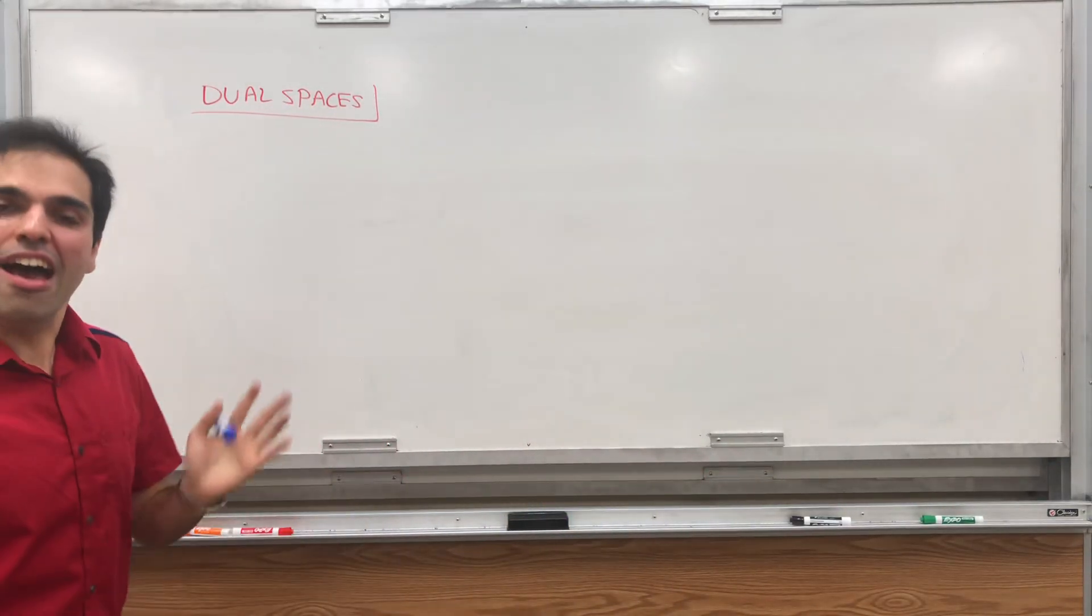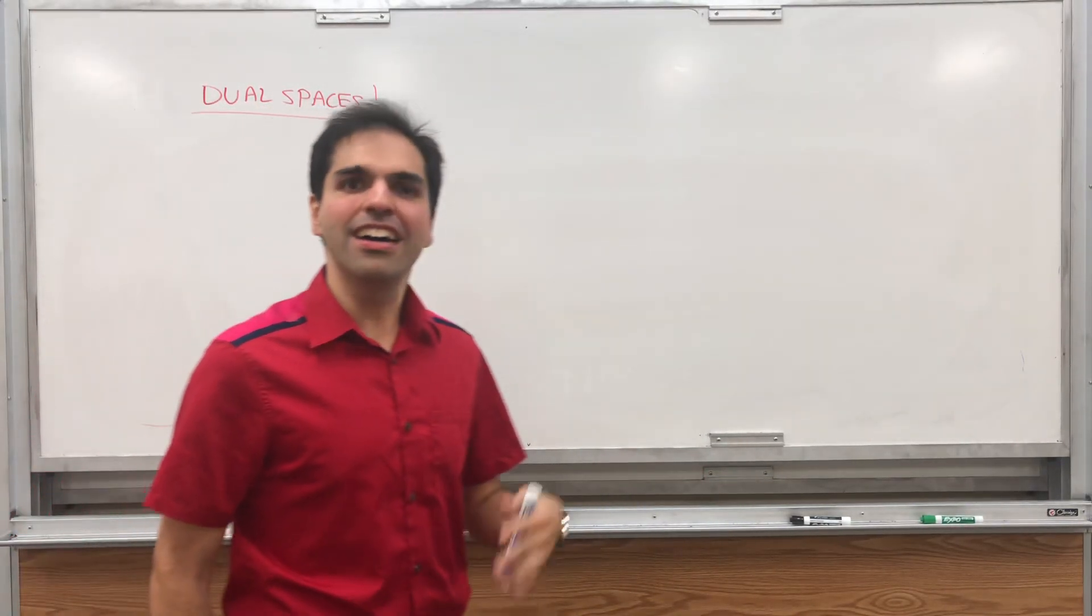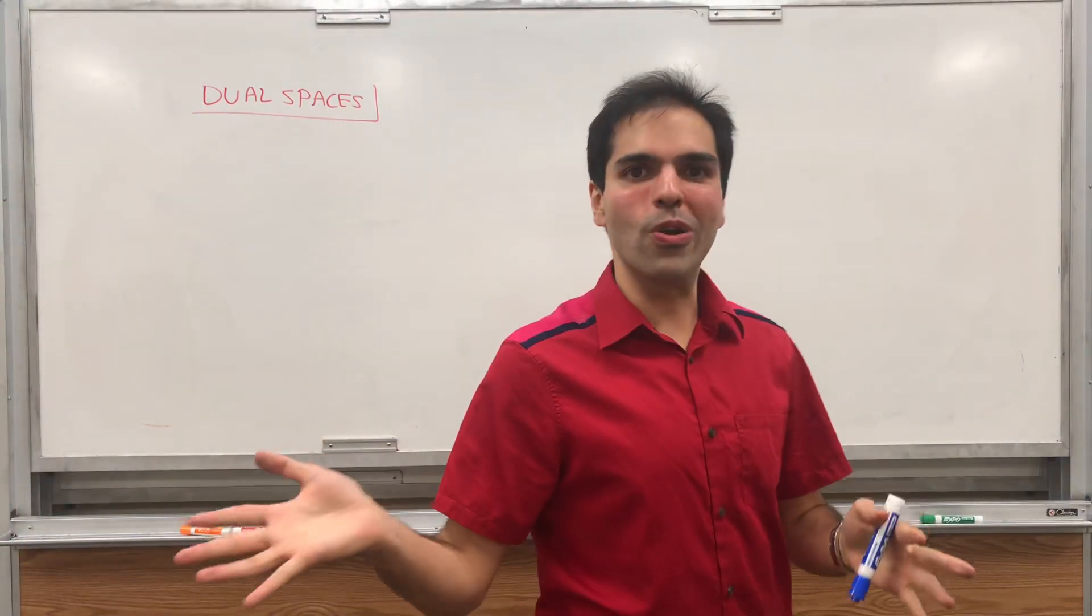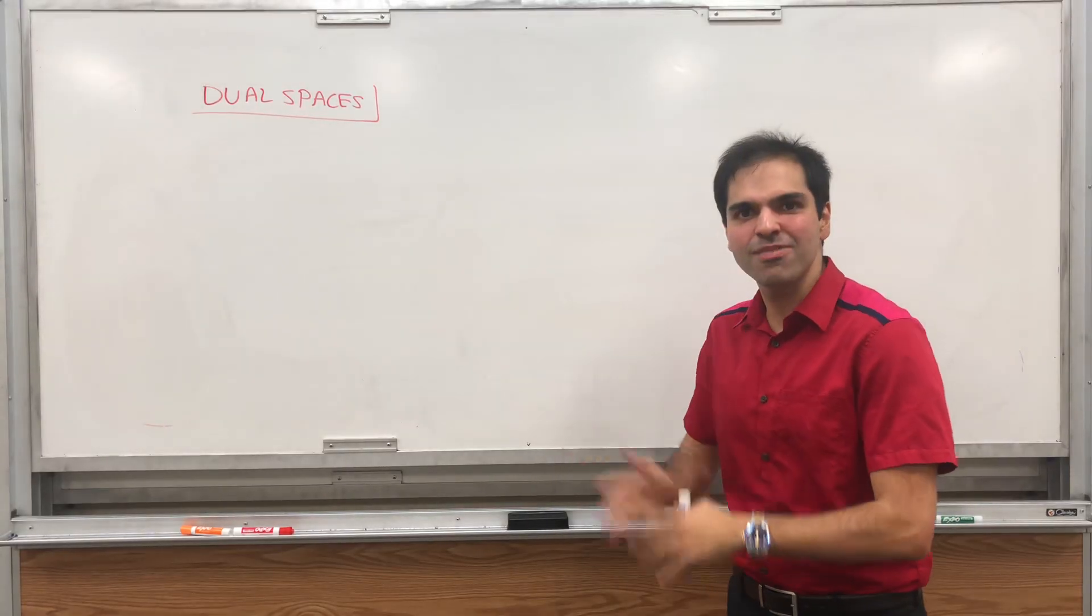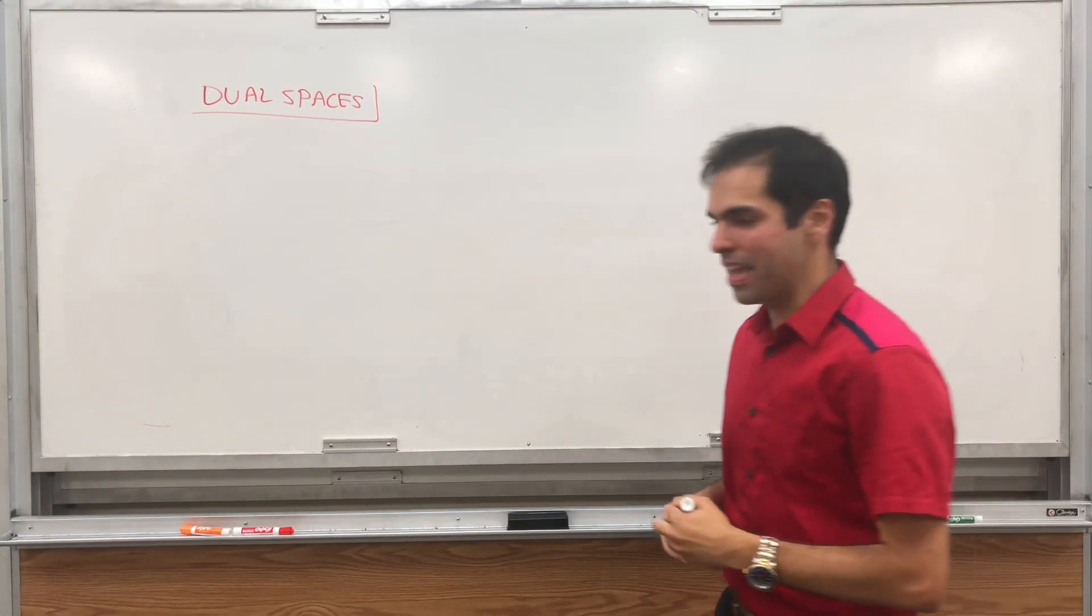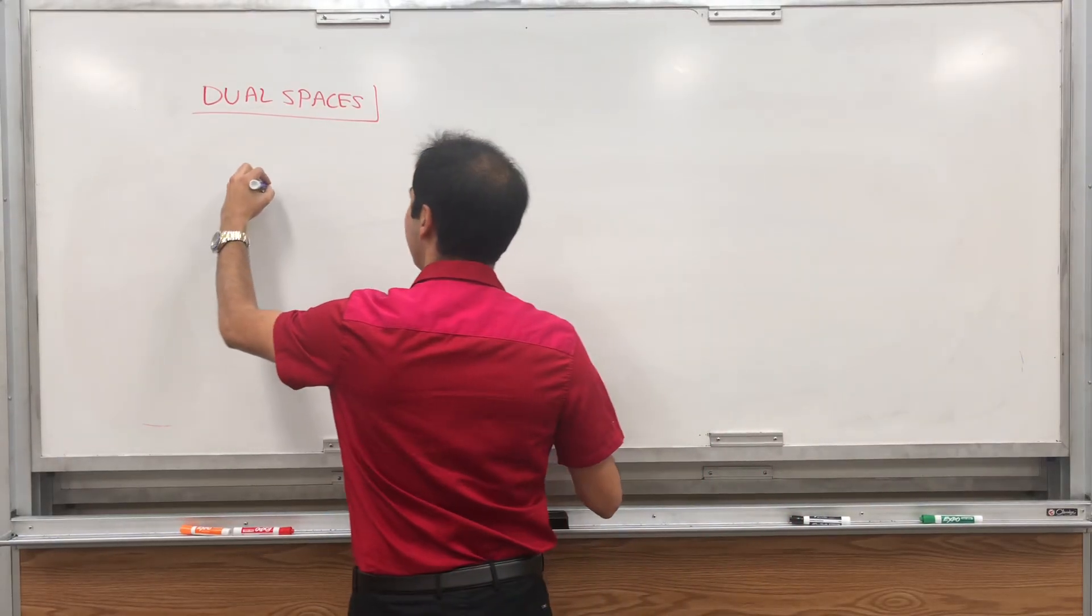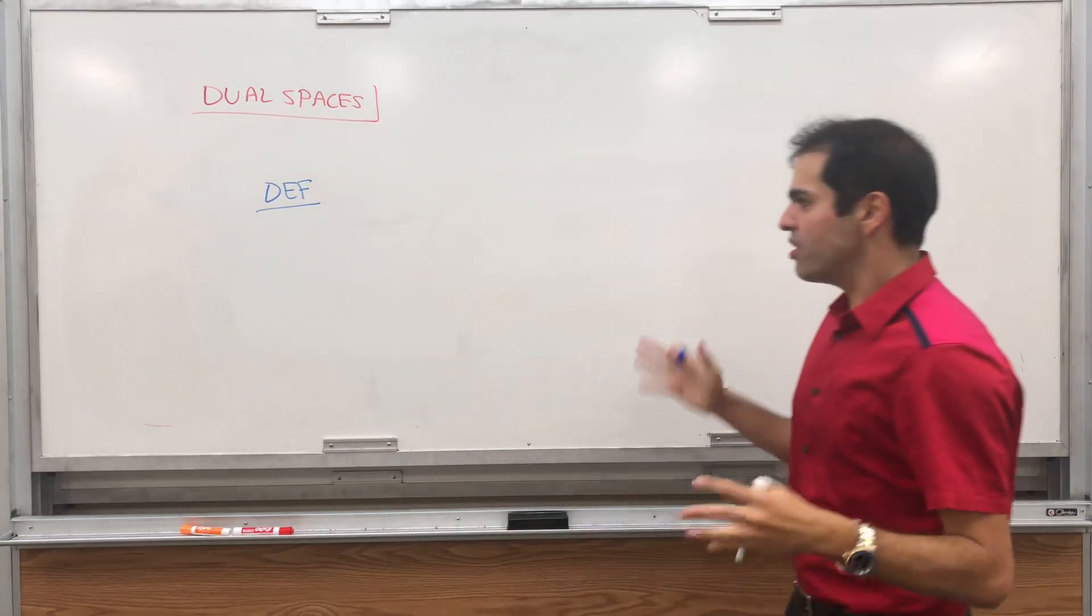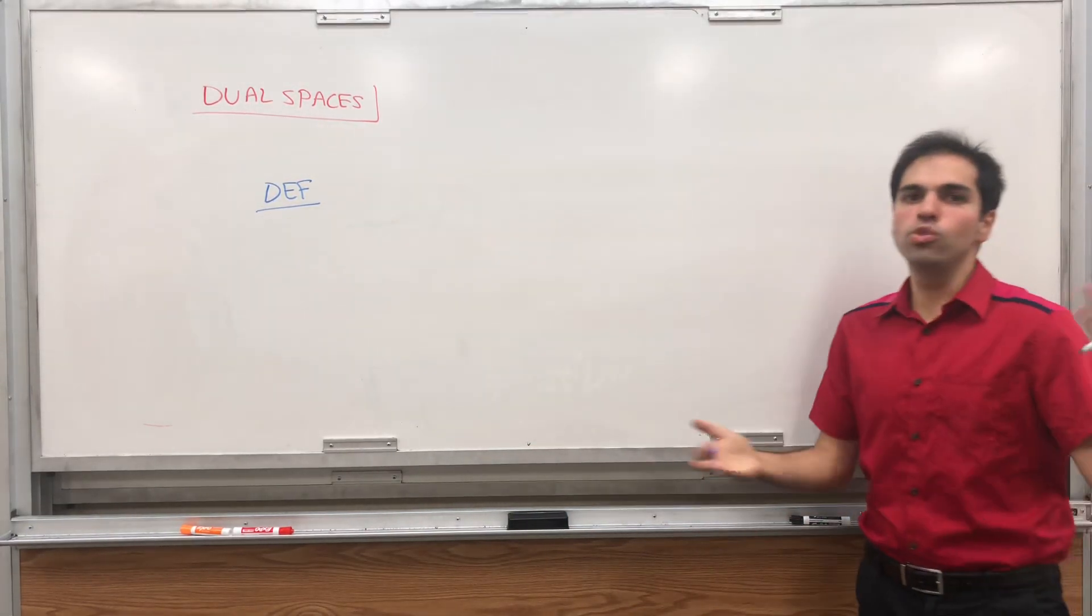So if you ever played Legend of Zelda, then you know that every world has a shadow world. Where it turns out every vector space has a shadow space called the dual space of V. So definition, what is the dual space? It's actually something that doesn't really look like dual. It just seems like just a regular definition.